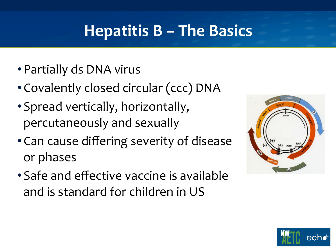First, hepatitis B is a partially double-stranded DNA virus. When it replicates, it can spin off covalently closed circular DNA, or CCC DNA. This is akin to the latent reservoir we see in HIV — it's very difficult to eradicate with therapy. You can control the viral load, but it's very difficult to actually cure. If you stop treatment in a suppressed patient, the CCC DNA serves as the reservoir to reseed the body.